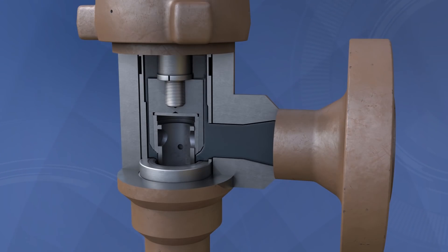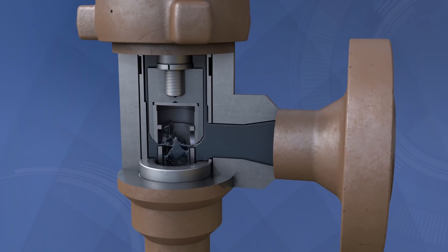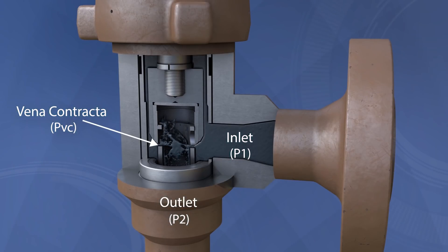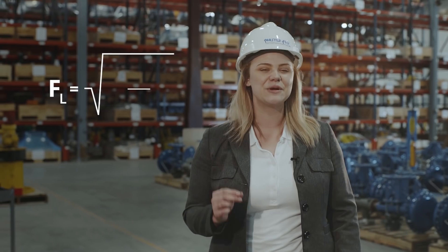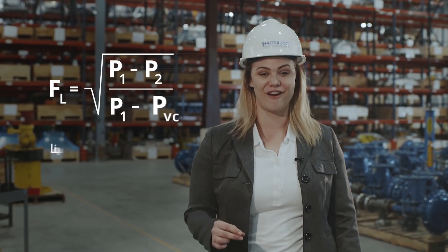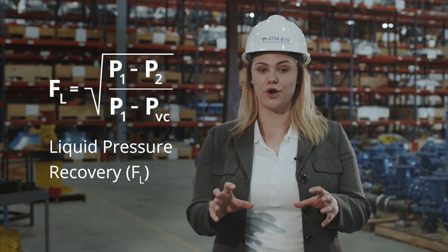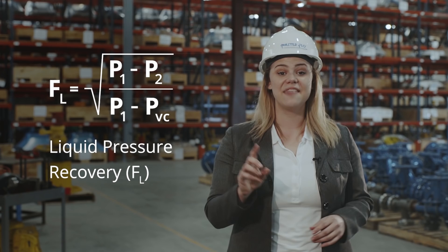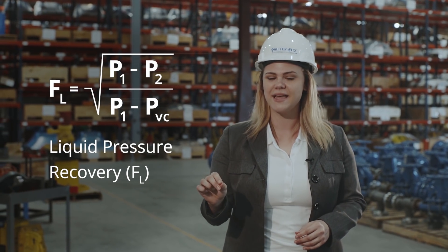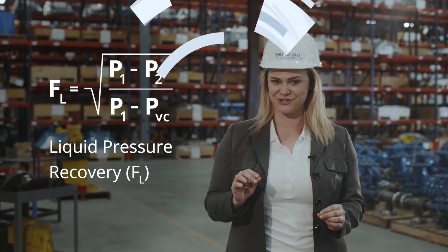In production, only inlet and outlet pressure values are measured. However, inside the valve at the throttling point, the pressure is much lower. This is designated as the Vena contracta pressure. That brings us to another important factor of the choke valve selection process: liquid pressure recovery. This is the ratio between the pressure drop and the difference between the upstream and the Vena contracta pressures.